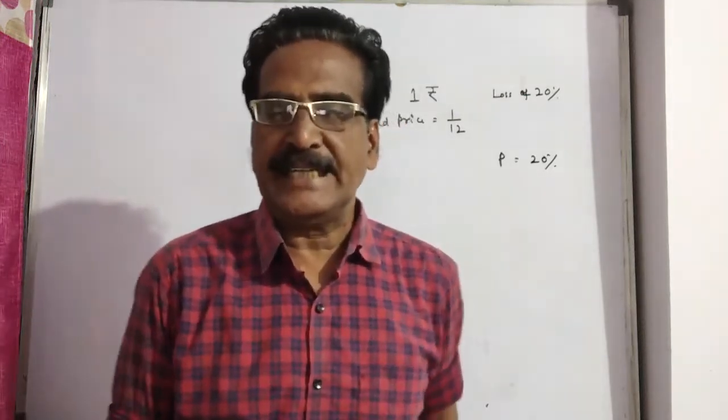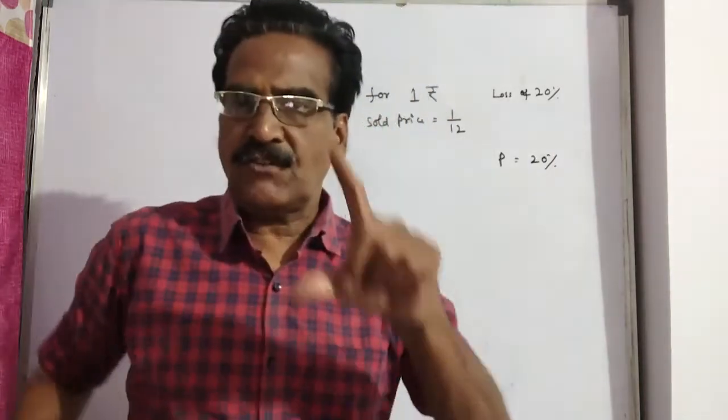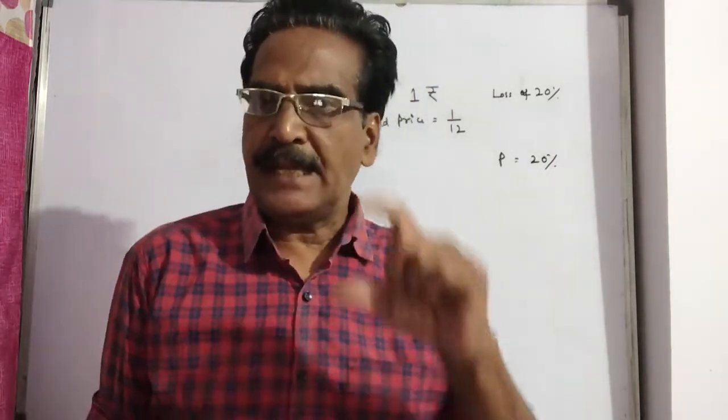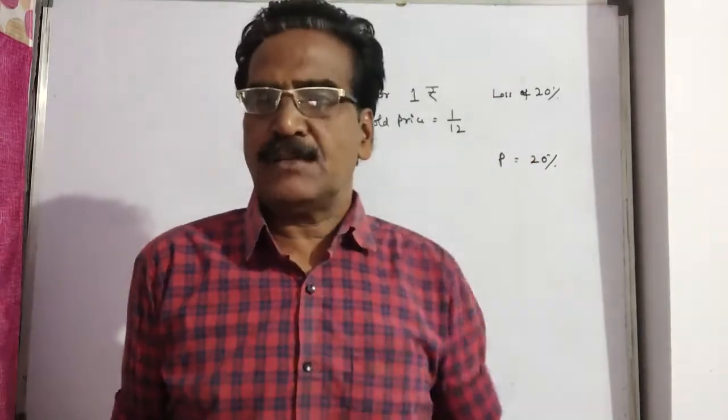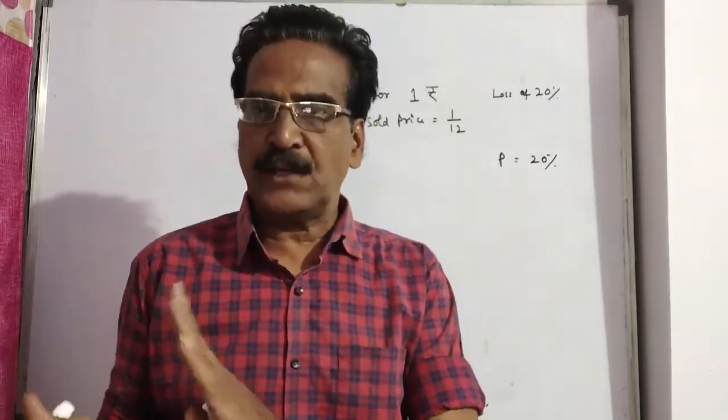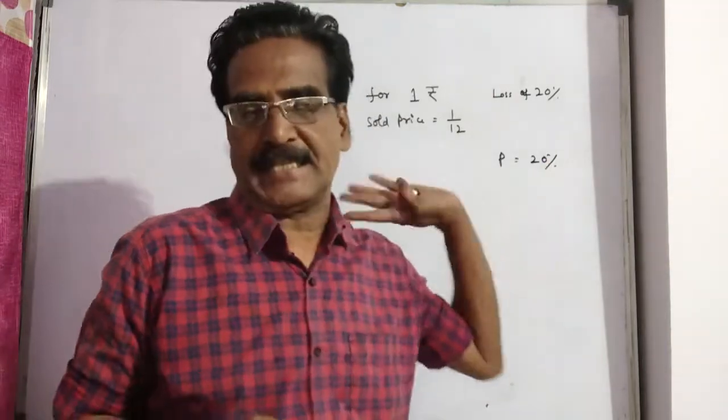Hi friends, good morning. Please look at the next problem in profit and loss. By selling 12 oranges for a rupee, a man gets a loss of 20%. The question is, how many for a rupee should he sell to gain 20%?